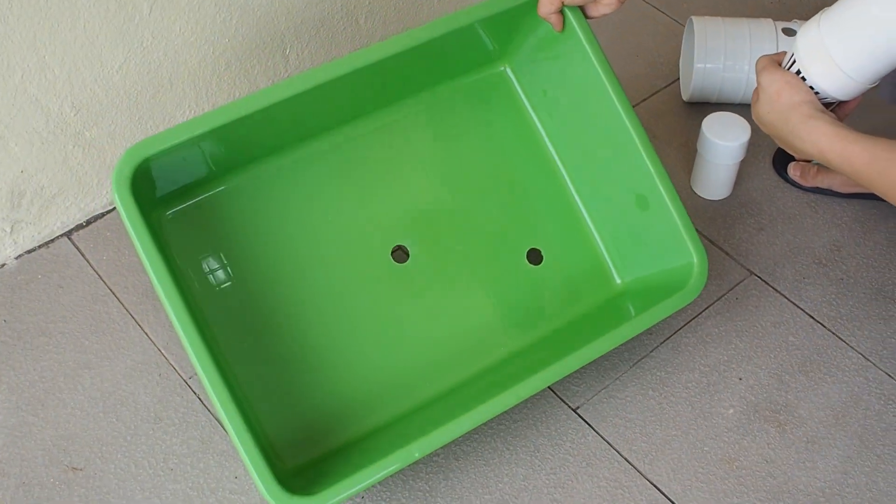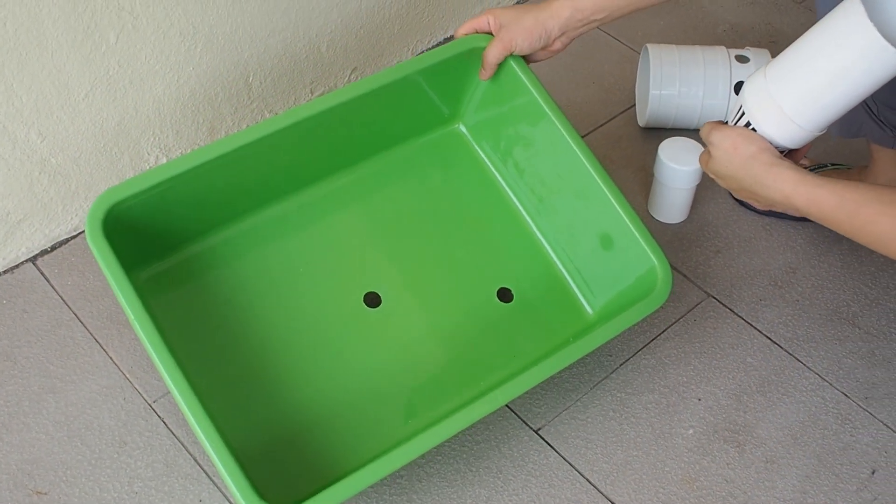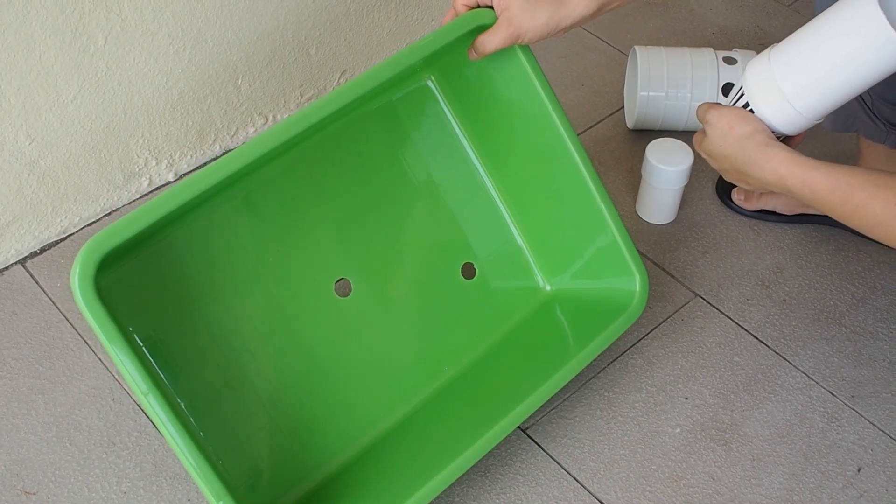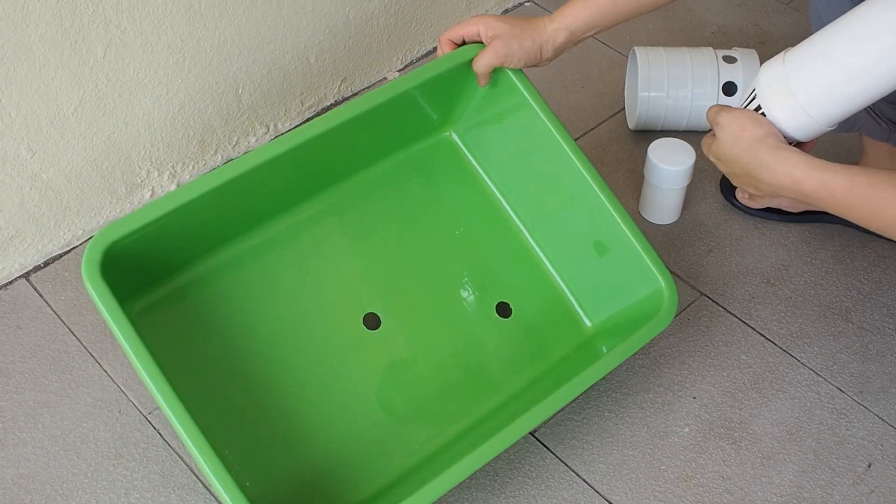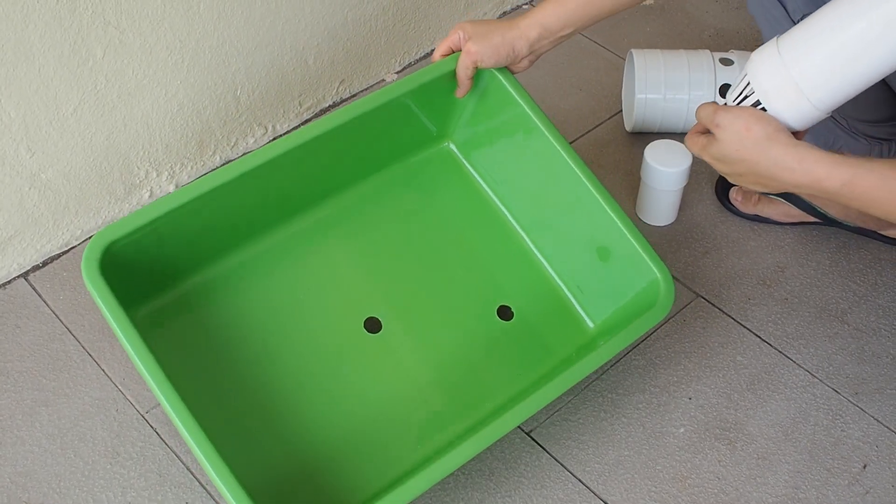So this is the grow bed tray for the aquaponic system and this is where you can plant the vegetables. At the same time you put in the bio-media for the nutrients conversion.